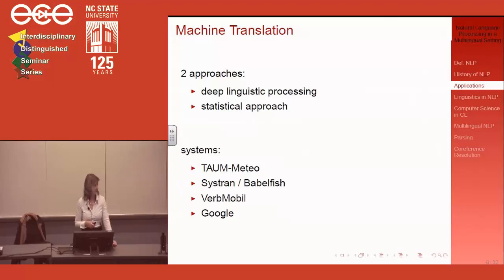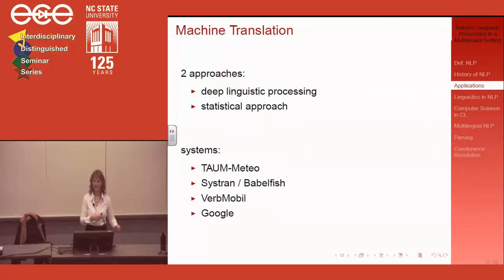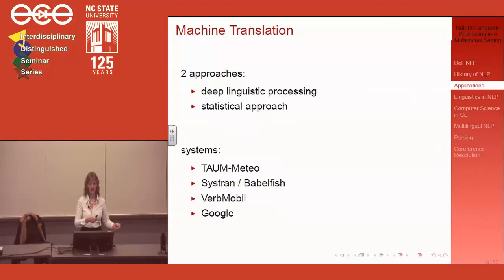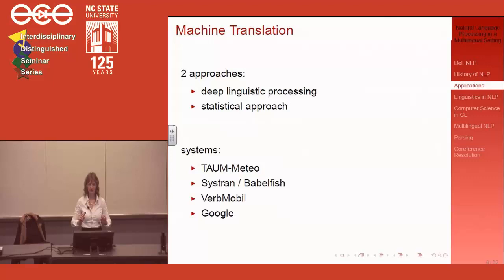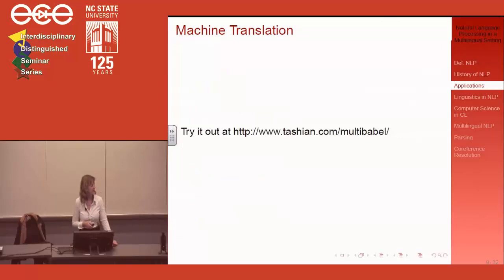Then there was Verbmobile, which kept a lot of NLP workers employed for a long time, and there's Google Translate. Has everybody tried Google Translate? The experience really depends on whether you're translating into English or from English to another language. Chinese works fairly well, I'm told. If you translate into German you get some interesting results. If you translate into Arabic — don't go there.